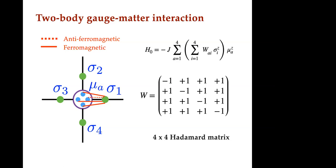We put a four-by-four interaction at each vertex, connecting every gauge spin to every matter spin inside the vertex with either a ferromagnetic or anti-ferromagnetic coupling of the same magnitude. The Hamiltonian is sigma-z times mu-z, and the matrix connecting them is a four-by-four Hadamard matrix W. The important thing is that W is orthogonal — the dot product of any two rows or columns is zero. This is the general form; Hadamard introduced these kinds of matrices in the 1860s and they have very nice properties.